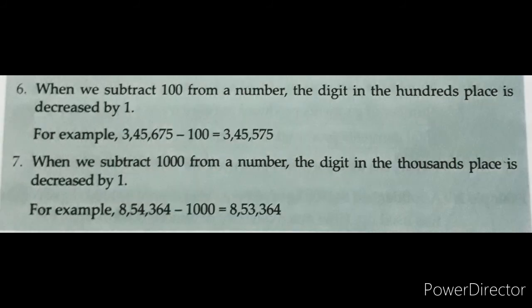Number 6. When we subtract 100 from a number, the digit in the hundreds place is decreased by 1. When we subtract 100 from any number, 1 is decreased from the hundreds place. For example, 3,45,675 − 100 = 3,45,575. As you can see, the hundreds place was 6; after subtracting 100, it became 5 in the answer — meaning 1 digit was reduced.